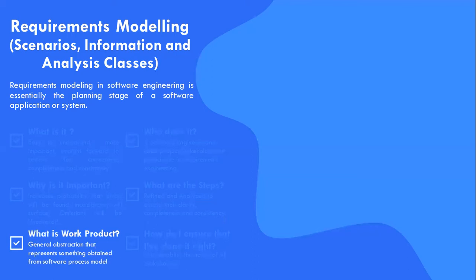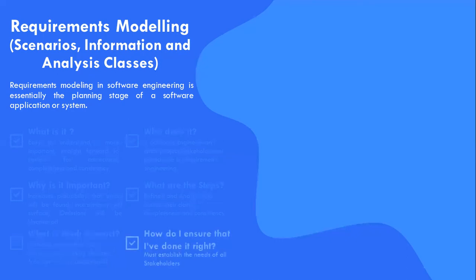This can be achieved through a number of work products: usage scenarios, functions and features lists, requirement models, or a specification. The requirements engineering work products are reviewed with the stakeholders to ensure that what we have learned is what they really meant.